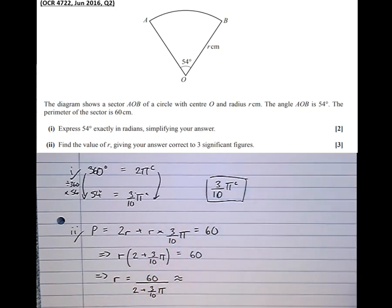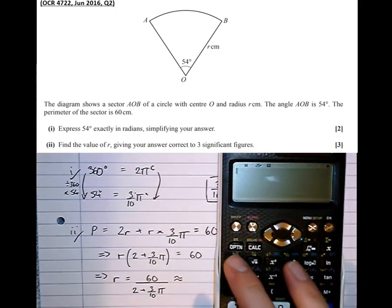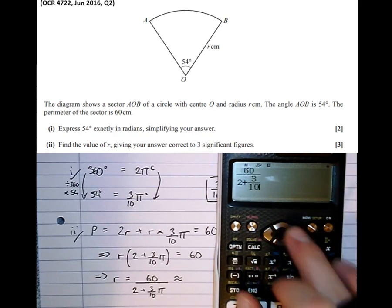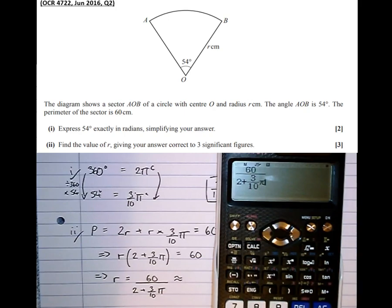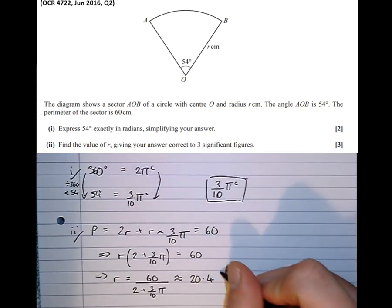Which is approximately equal to, it's asked for the answer correct to 3 significant figures. So 60 over 2 plus 3 tenths π is 20.4 to 3 significant figures. 20.4 to 3 significant figures.